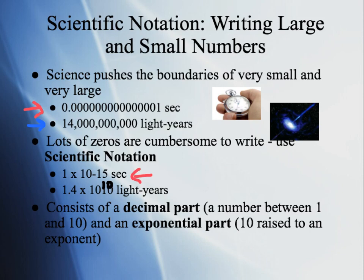In scientific notation, there are always two parts: a decimal part, which is the number in front of the times 10 — and that number has to be between 1 and 10. If you have a number higher than 10, you need to move the decimal over one more time. We also always have an exponent part — times 10 raised to an exponent number.